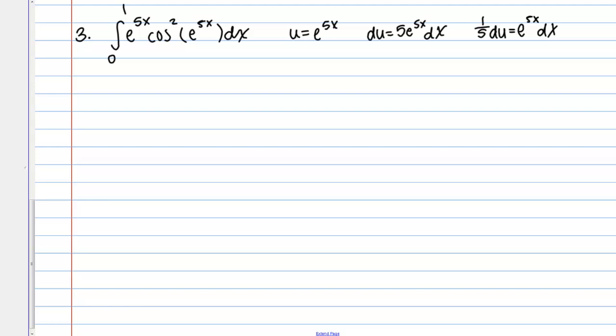So that takes care of all the terms inside my integral, but let's go ahead and transform the bounds as well. So I have x equals 0. If I plug that into u, I get e to the 0, which is 1, so u equals 1. And then x equals 1 is my upper bound. If I plug that in, I get u equals e to the 5.